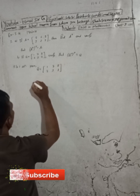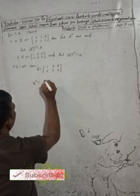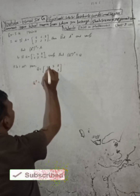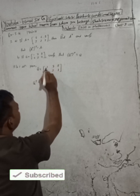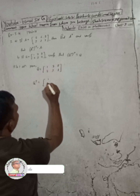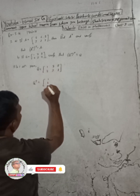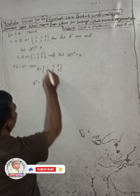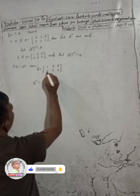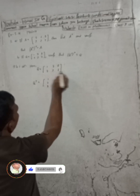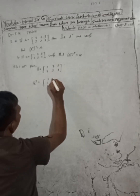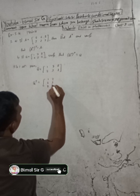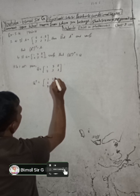Therefore Q transpose is equal to: interchange the rows and columns. The first row becomes the first column: one seven eight. The second row becomes the second column: two three seven. So we have found Q transpose.